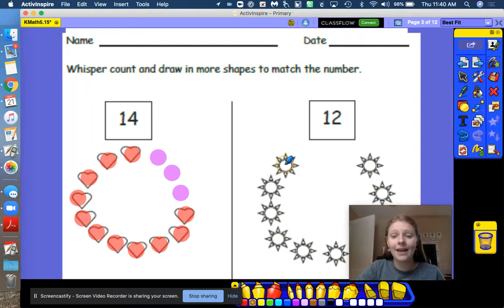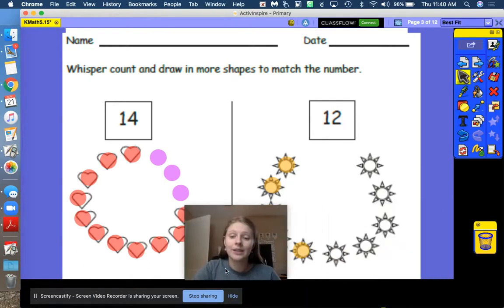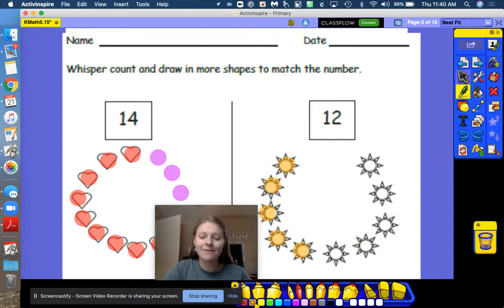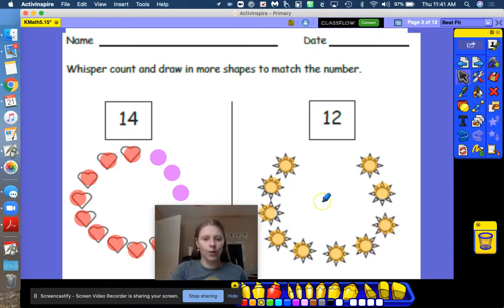All right, let's count and see how many suns I have. And then we need to make sure that we match the number twelve. One, two, three, four, five. Oops. Let me move that for you, friends. We're on five. Ready? Six, seven, eight, nine, ten. I have ten orange stars. Ten and how many more makes twelve? Ten and two. Great job. Two more suns. So we have all together ten orange suns and two yellow suns. Ten and two makes twelve.